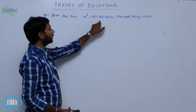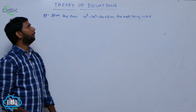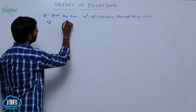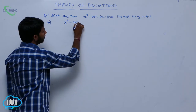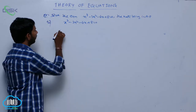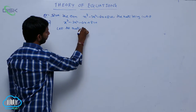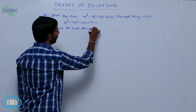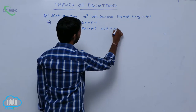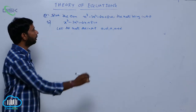Solve the equation x cube minus 3x square minus 6x plus 8 equal to 0, the roots being in AP. The given equation is x cube minus 3x square minus 6x plus 8 equal to 0. Let the roots be in AP: A minus D, A, A plus D.